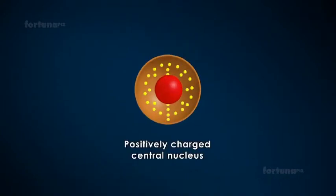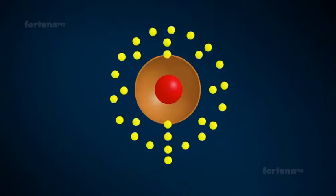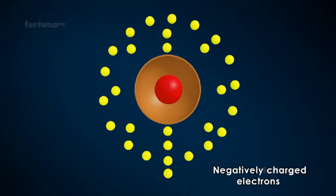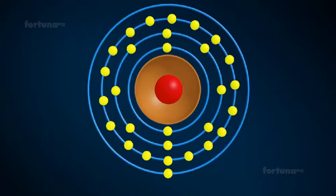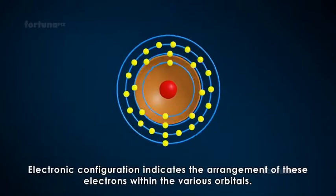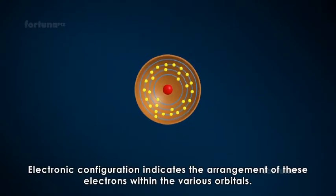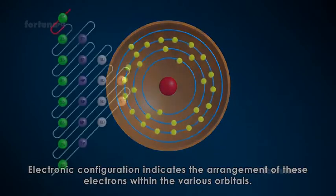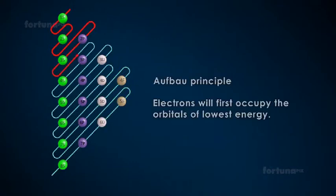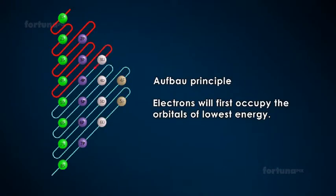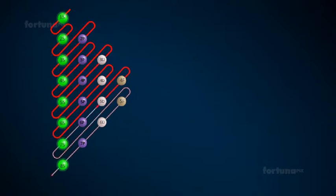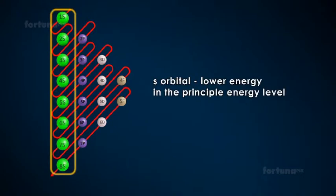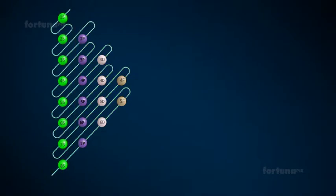The term electronic configuration indicates the arrangement of these electrons within the various orbitals. According to the Aufbau principle, electrons will first occupy the orbitals of lowest energy. An s orbital, for example, will have lower energy in the principal energy level.